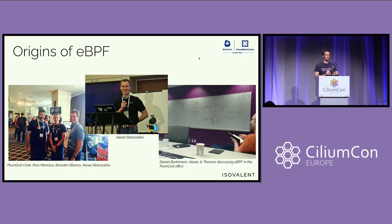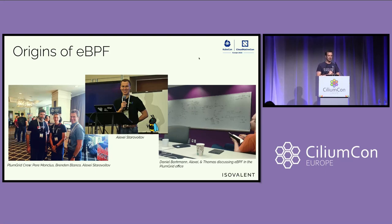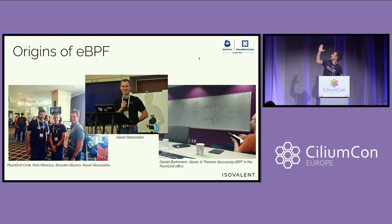Where did this start? There was a startup called PlumGrid, all the way back in 2014. You see the original team — Per, Brendan, and Alexei Storovoytov. They essentially brought eBPF into the Linux kernel initially, and it quickly became a topic of interest and focus. PlumGrid was not the only company involved. We also see Daniel in the PlumGrid office together with me discussing eBPF. We already had Cilium in mind at this point, but we had to first develop eBPF further.